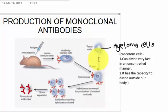They grow in a culture formed by polyethylene glycol. During the fusion, the unfused myeloma cells are deficient in an enzyme called HGPRT, while the fused hybridoma cells are not. So you have to take the hybridoma cells and culture them in a HAT medium.